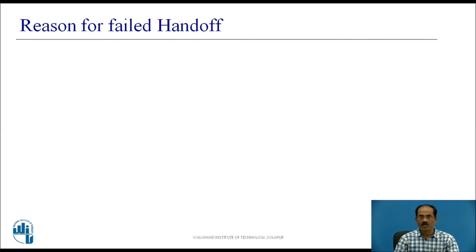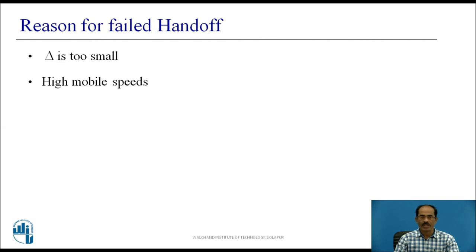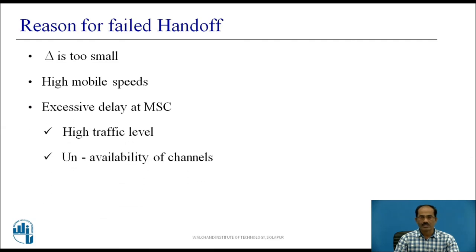There are various reasons for hand-off failure. These include when delta is too small or too large, insufficient time to complete a hand-off before the call is lost due to a weak signal condition, a mobile user moving at very high speed while a call is in progress, excessive delay at the MSC due to high traffic levels, and unavailability of channels at the time of switching.